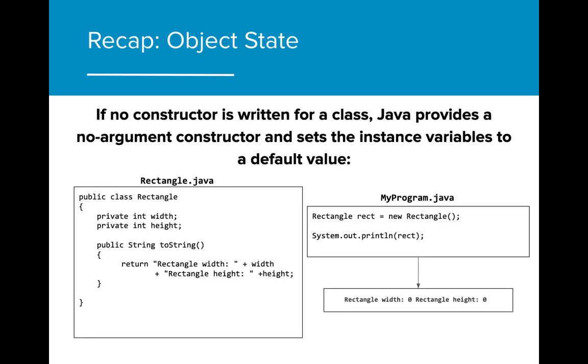It's important to note that we can also initialize the value of instance variables without a constructor. If a class does not have a constructor written, Java allows us to use a no-argument constructor to create an object for that class. If the instance variables have not already been initialized, Java will initialize them with a default value. In this example, the rectangle.java class does not have a constructor.